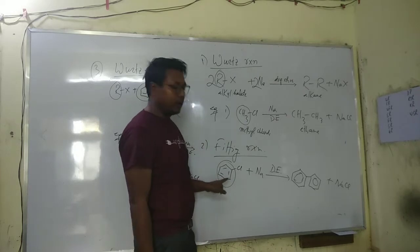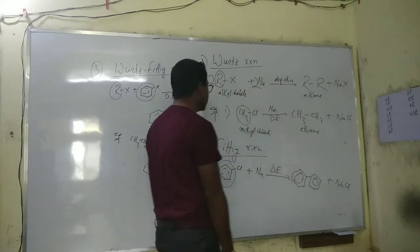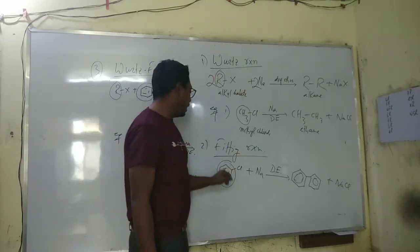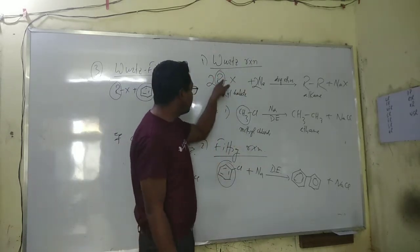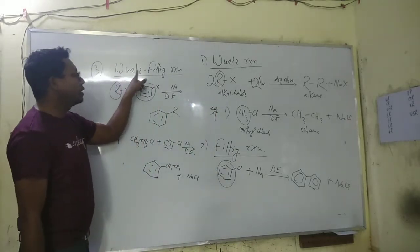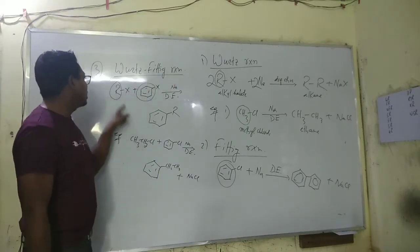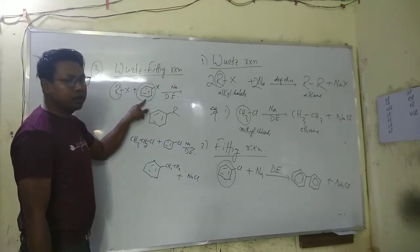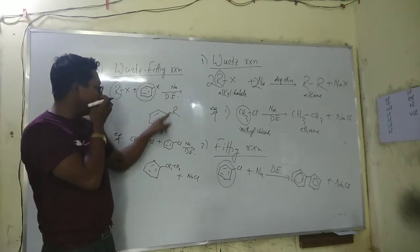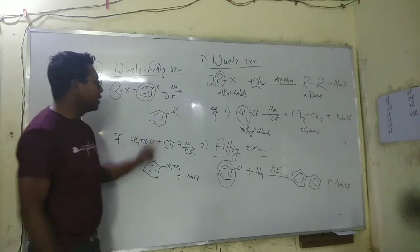The second NEM reaction is the Fittig reaction, also called the Wurtz-Fittig reaction. In this reaction, an alkyl halide reacts with an aryl halide along with sodium in the presence of dry ether to form alkyl benzene.